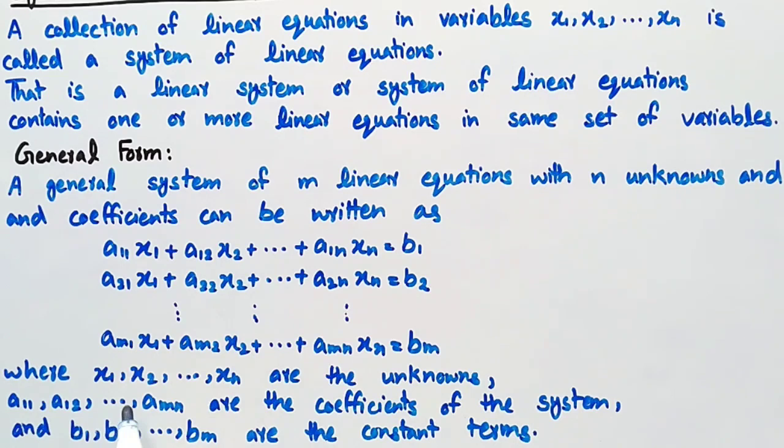Where x1, x2, up to xn are the unknowns, a11, a12, up to amn are the coefficients of the system, and b1, b2, up to bm are the constant terms.